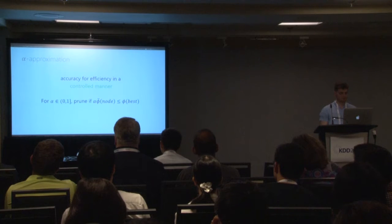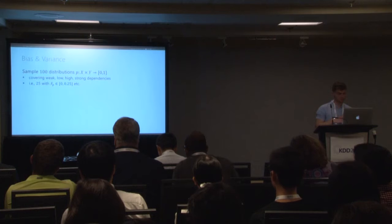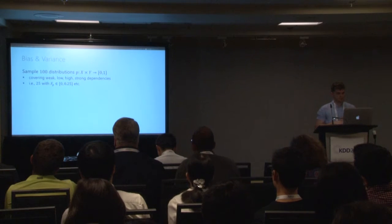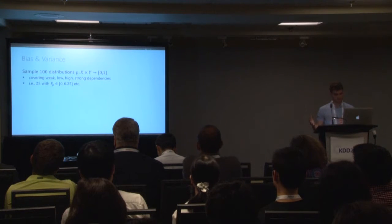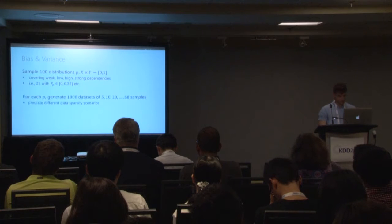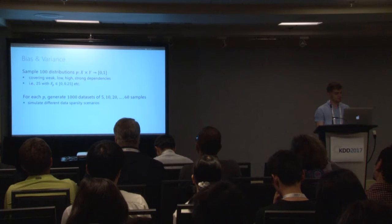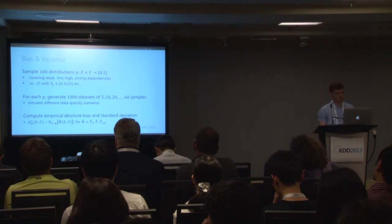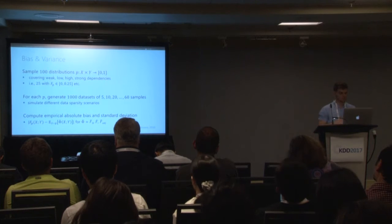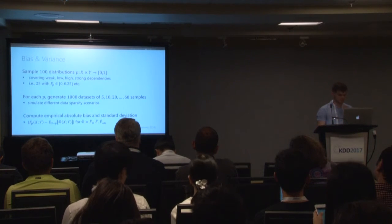Now for the evaluation part. For bias and variance of our estimator, we sampled 100 distributions covering weak, low, high, and strong dependencies — 25 each in bins of [0, 0.25], [0.25, 0.5], [0.5, 0.75], and [0.75, 1]. For each distribution we generated 1,000 datasets of 5, 10, 20, 30, 40, 50, and 60 samples to simulate different data sparsity scenarios. Since we know the actual distribution, we calculate the empirical absolute bias and standard deviation, comparing against the naive estimator and an adjusted-for-chance fraction information from a framework proposed last year.